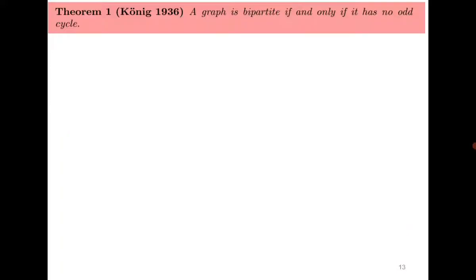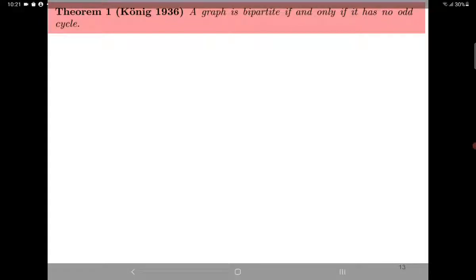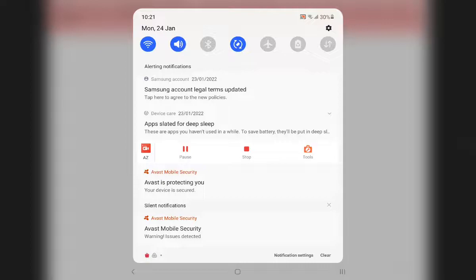Based on connectivity, we will discuss many results. In the next class we start by proving the result that a graph is bipartite if and only if it has no odd cycles. You can try to prove it yourself. Thank you.